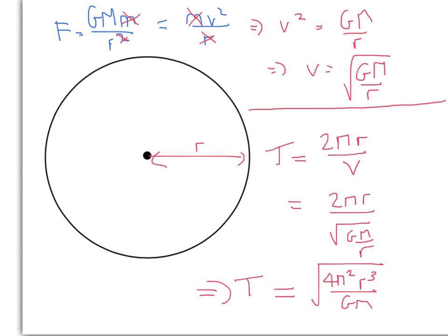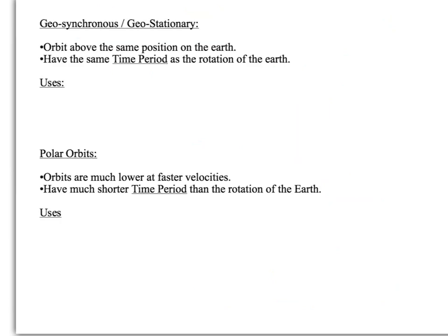So that's the expression for the time period, the time taken to complete one complete orbit. Let's have a look at some specific types of satellites. We have the geosynchronous satellite, often known as a geostationary satellite. The key thing to know is it orbits above the same position on the Earth, and actually they are above the equator. That's how it manages to stay above the same point. And they have exactly the same time period as one rotation of the Earth. That's how they track the same point.